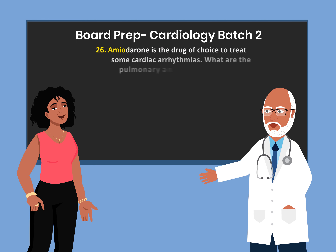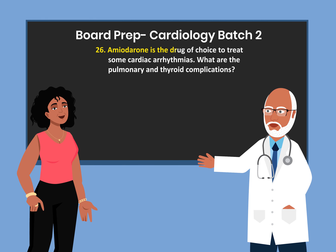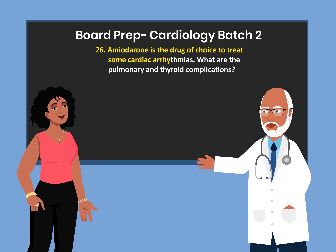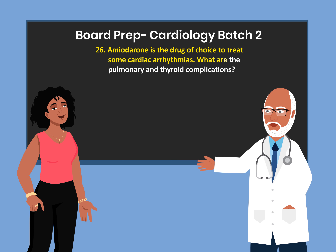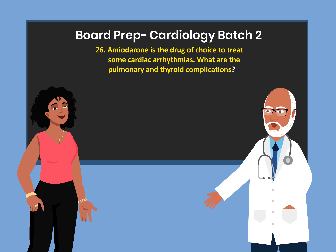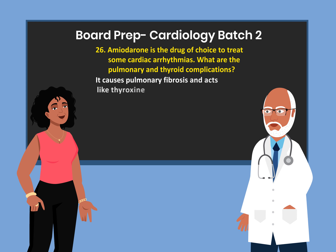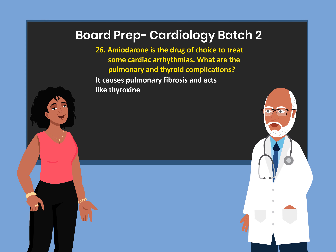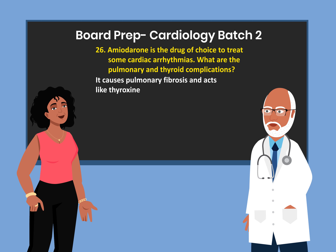Amiodarone is the drug of choice to treat some cardiac arrhythmias. What are the pulmonary and thyroid complications? It causes pulmonary fibrosis and acts like thyroxine.